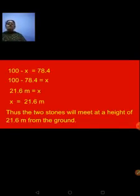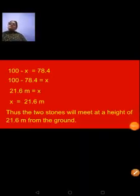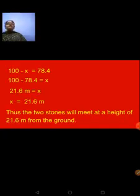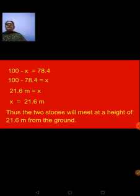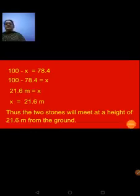So the two stones meet at a height of 21.6 meters from the ground and at t = 4 seconds. With this we come to the end of today's session. Please practice this sum — it's quite straightforward. Remember the velocity of 25 m/s applies to the stone thrown upward, while the stone dropped from the tower has initial velocity zero. Play the video again, practice carefully, and I'll meet you in the next class. Take care and bye!